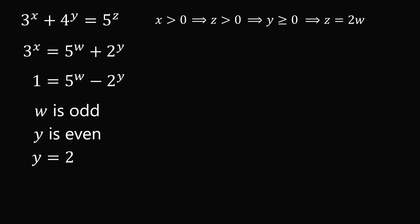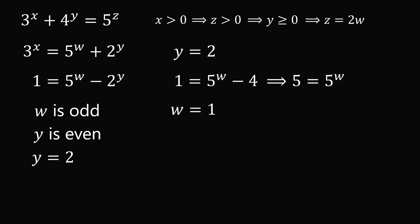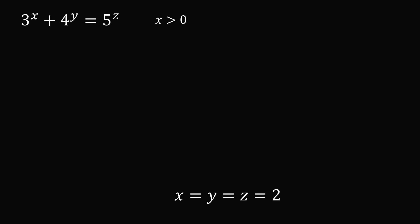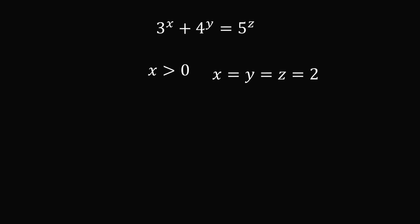So we're left with the case that y is equal to 2. Substituting into the second equation, we can solve that w is equal to 1, so z equals 2w, which equals 2. Thus 3 to the power of x plus 4 squared equals 5 squared, which means x is equal to 2. So this solution is x equals y equals z equals 2, and that is the only solution where x is greater than 0.